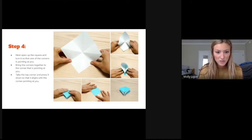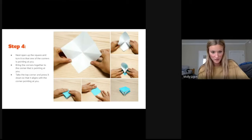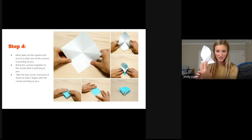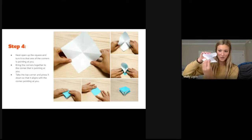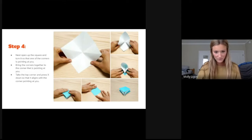Okay, next we're going to open up the square and turn it so that one of the corners is pointing towards you. I think this is called an accordion fold. And then you want to bring the corners together to the one that is pointing towards you. This part's kind of tricky. So it's kind of supposed to look like that. And then you want to fold the top corner down over the other corner pointing at you.